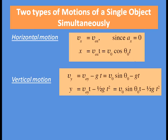Similarly, the distance covered in the vertical direction is y = Voy·t − ½·g·t². Here we have used the equation of motion S = ut + ½at², with initial velocity Voy. The minus sign is due to a = minus g.